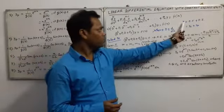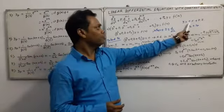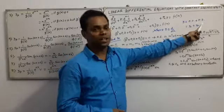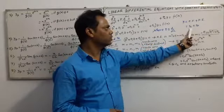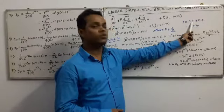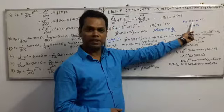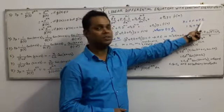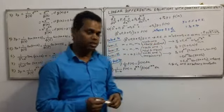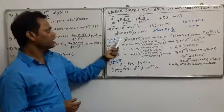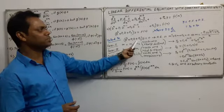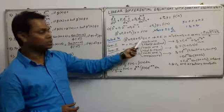To find y, we have to find initially CF, then PI. CF means yc and PI means yp. CF is known as the complementary function and PI is known as the particular integral. To find yc, D^2 + p1*D + p2 = 0.